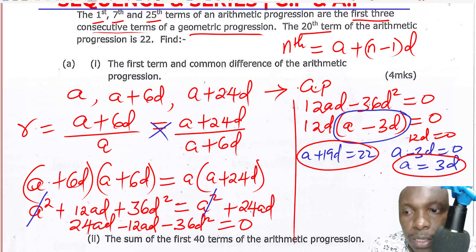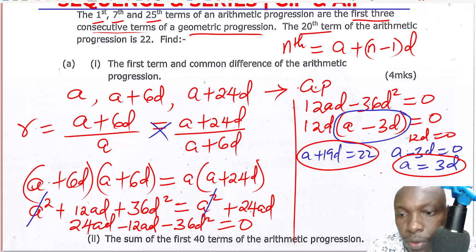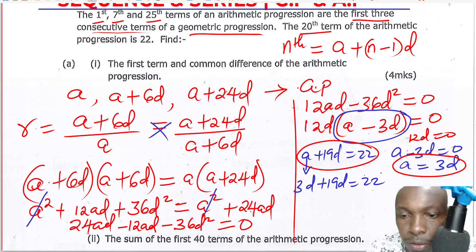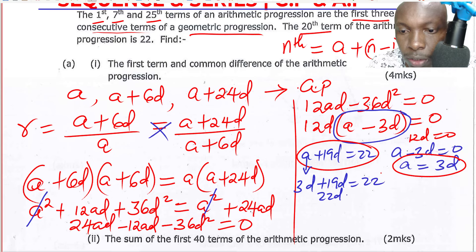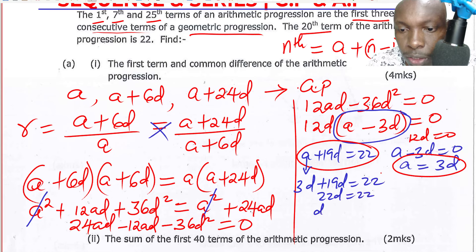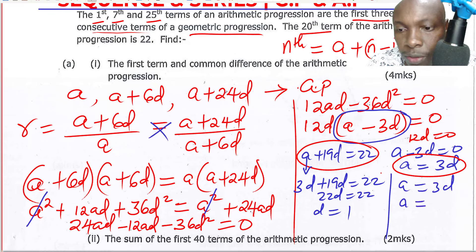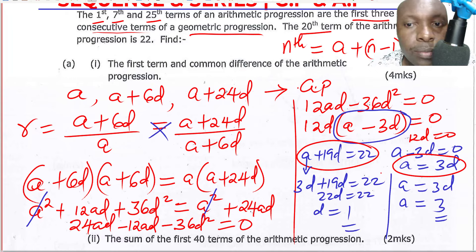Using substitution — since A equals 3D — we substitute: 3D plus 19D equals 22, giving 22D equals 22, so D equals 1. And since A equals 3D, A equals 3. We have found the first term A equals 3 and the common difference D equals 1.